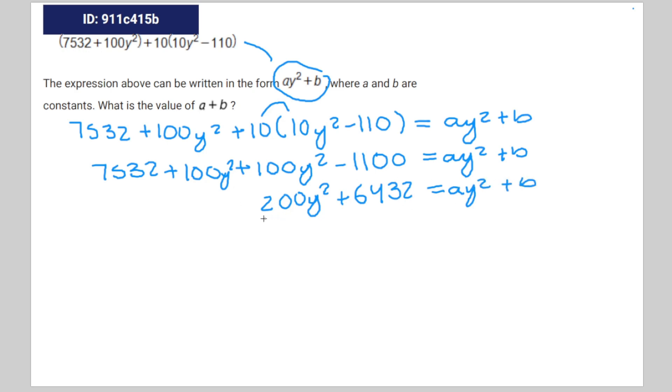Where a corresponds to 200. So a is equal to 200. And b corresponds to the constant of 6,432. So b is equal to 6,432.